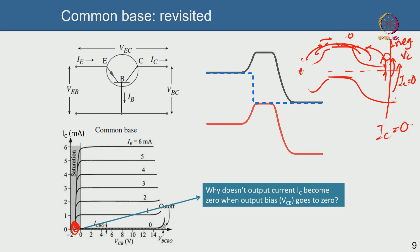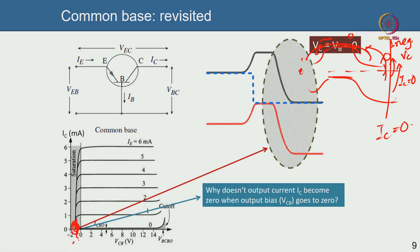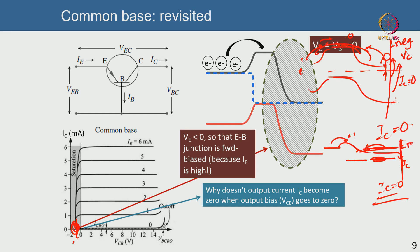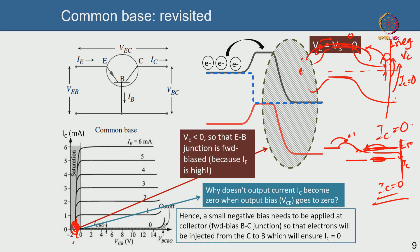Think of it this way: the base Fermi level is at zero, the collector Fermi level is at zero, but the emitter Fermi level is below (negative bias). Emitter injects electrons that come out of the collector — you don't want that. So you raise the collector Fermi level by applying negative voltage, so both emitter and collector inject electrons that nullify each other and collector current becomes zero. This is the common base configuration.